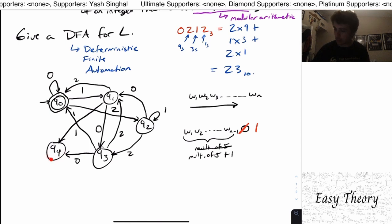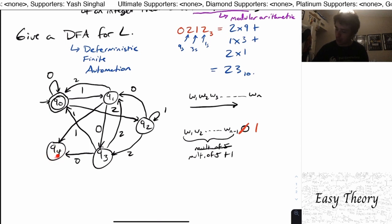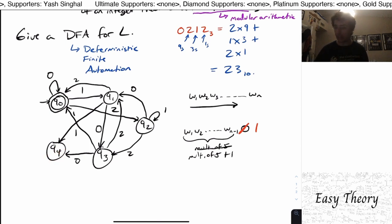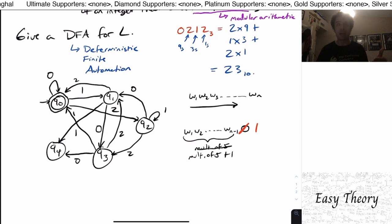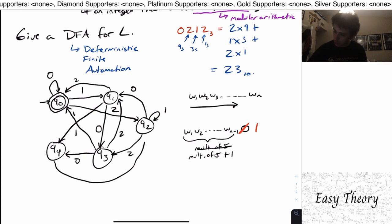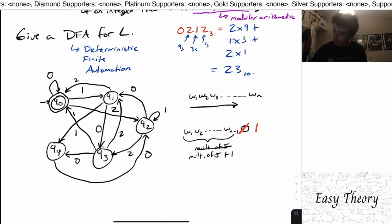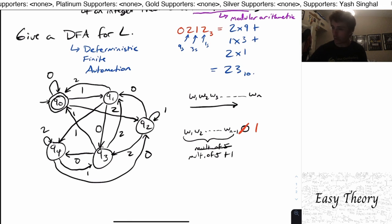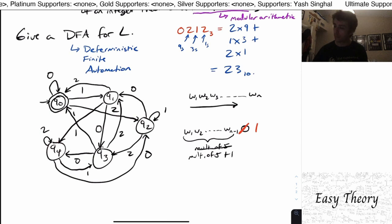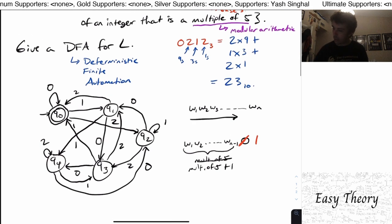And then now finally let's do q4. So on input 0, the remainder was 4 before, multiply by 3 which gives us 12, and then minus 5 is 7, minus 5 is 2. So the 0 transition goes here, the 1 transition goes 1 further along, and then the 2 transition goes 1 further along. Because the 1 went to 3, 2 must go to q4. And let's verify that this is the case.